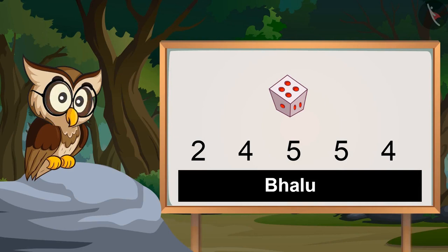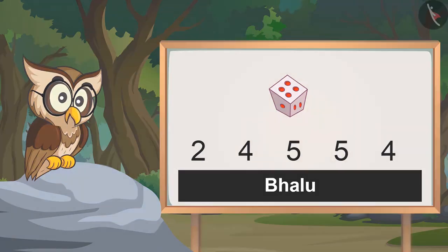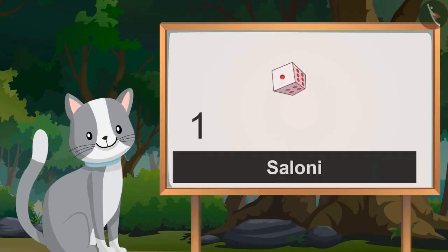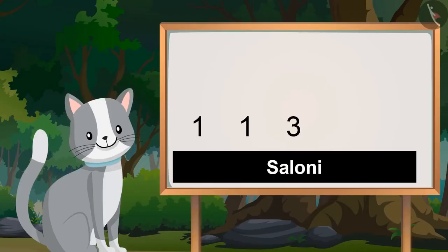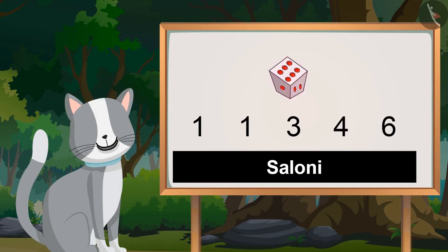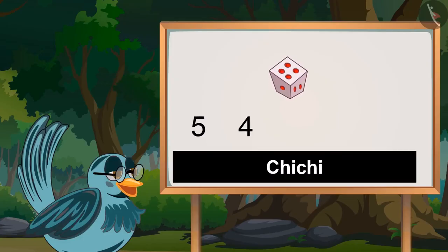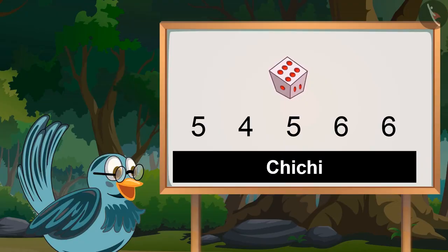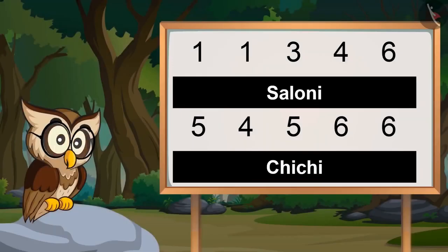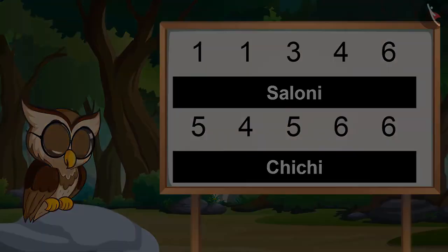Now Chichi and Saloni, turn-wise roll the dice and see what numbers you get. One, one, three, four, six, five, four, five, five, six, six. So Chichi and Saloni got these numbers on the dice.